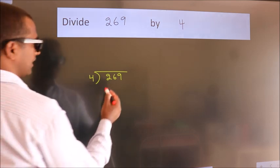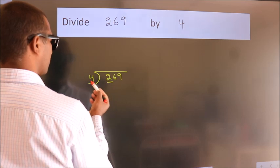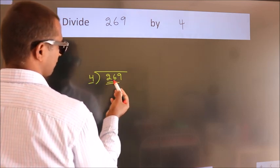Next, here we have 2, here 4. 2 is smaller than 4, so we should take 2 numbers: 26.